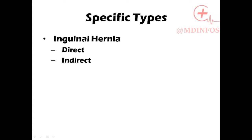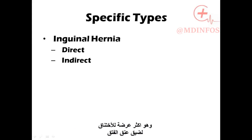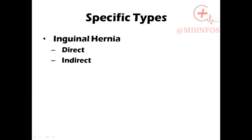The indirect inguinal hernia is the congenital subtype. It usually protrudes down to the scrotum, occurs mostly in children, and is more prone to strangulation because of its narrower neck.